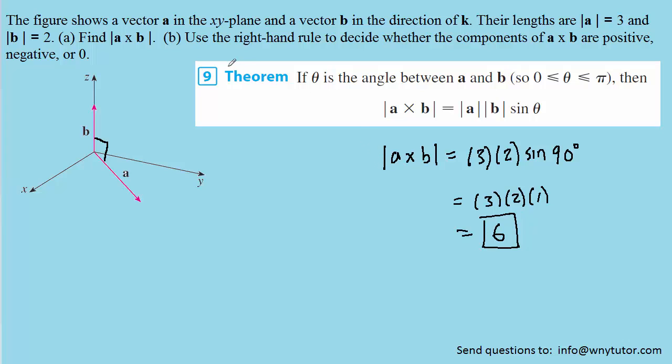We can now move on to part B and use the right-hand rule to decide whether the components of A cross B are positive, negative, or zero. We know that when we take a cross product between vectors A and B, the result is a third vector that we could call C that is going to be perpendicular to both vectors A and B.